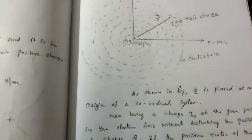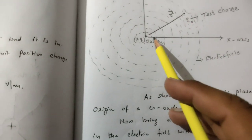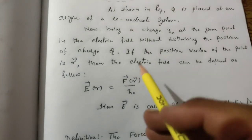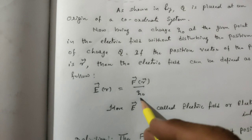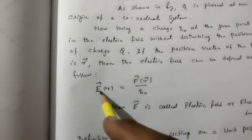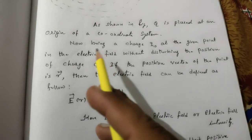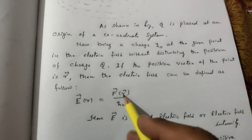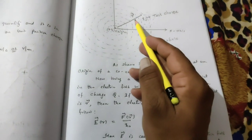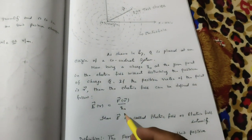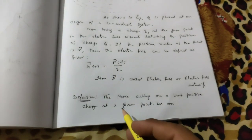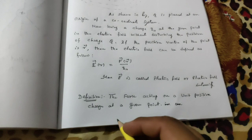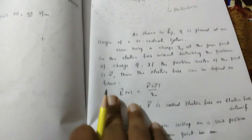Force per unit charge is known as electric field. By using this equation, you can easily find electric field intensity. The equation is: E(r) = F(r) / q0. So force per unit charge is known as electric field intensity. Here r is the position vector, E stands for electric field, F is the force occurring between the two charge particles, and q0 stands for test charge. Definition: the force acting on a unit positive charge at a given point is indicated as electric field or electric field intensity.